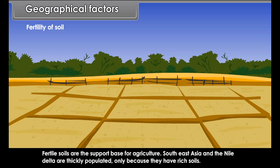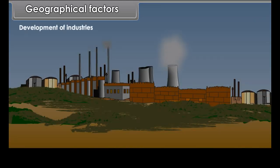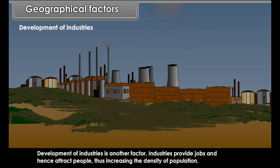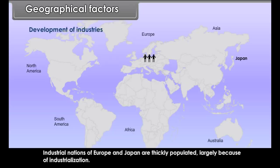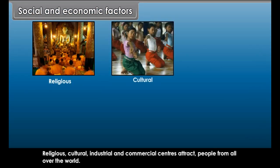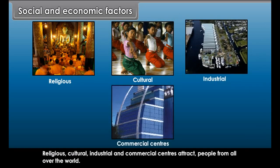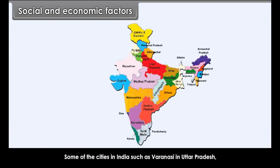Fertility of soil attracts people, as fertile soils are the support base for agriculture. Southeast Asia and the Nile Delta are thickly populated only because they have rich soils. Development of industries is another factor — industries provide jobs and hence attract people, increasing the density of population. Industrial nations of Europe and Japan are thickly populated largely because of industrialization.